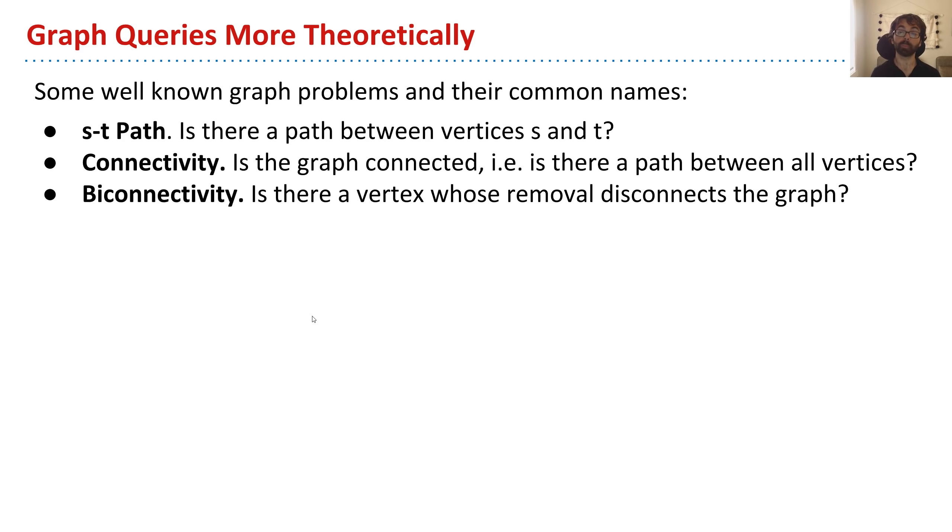Another problem is biconnectivity. Is there some vertex that if you remove it, the graph becomes disconnected? It's basically a critical link, a bridge. If you're using a graph to model maybe a logistic supply chain or a power distribution network, biconnectivity may be a bad feature because it means you have a single point of failure that may cause your entire system to stop working.